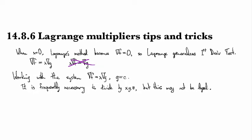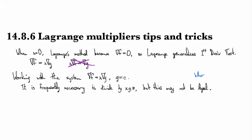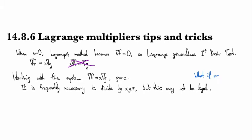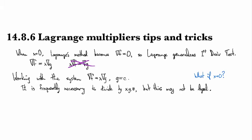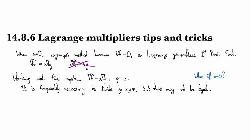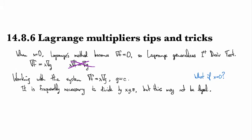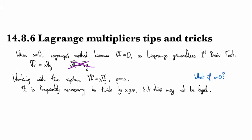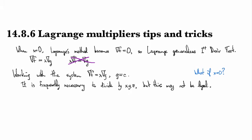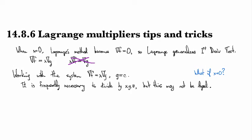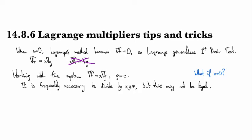Because, like, what if you have a critical point or a point of interest where one of your variables is equal to zero, right? If you, then you can't divide by zero, right? And if you attempt to do that while solving the system, you'll lose a solution.